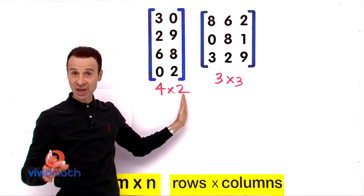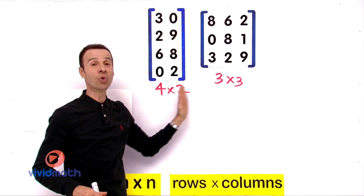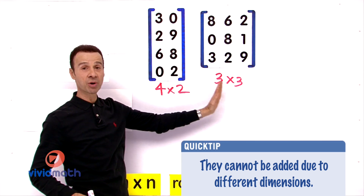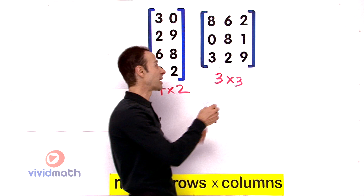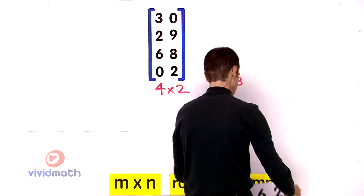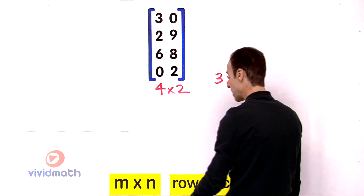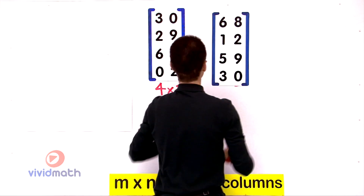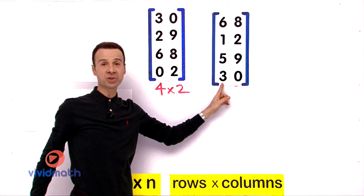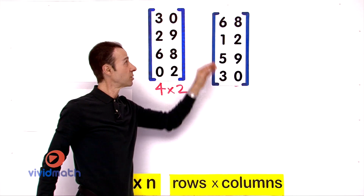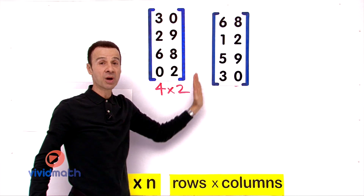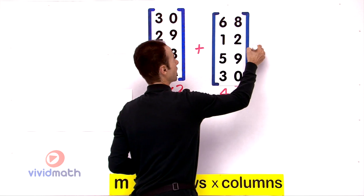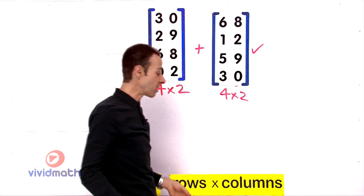No, we can't. You can't add them because they are of different order and different dimensions — this is a four by two and that is a three by three; you cannot add them, it is not defined. But what you can do is add this matrix to another four by two — one, two, three, four rows by two columns — that is also four by two, so yes, you can add them together.